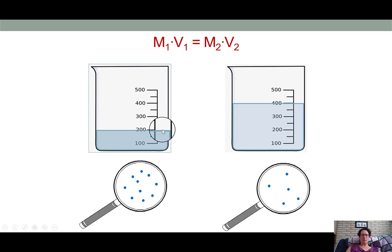Looking at the magnifying glass we see five blue dots per window. So we've changed the volume twofold, going from 200 milliliters to 400 milliliters, and so the amount of solute per volume has decreased twofold, going from ten particles per magnifying glass down to five.